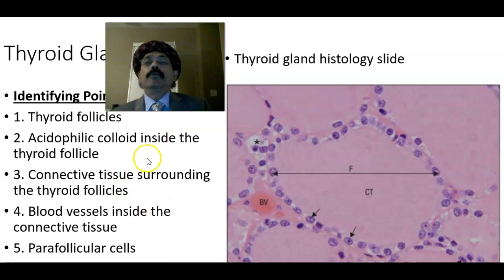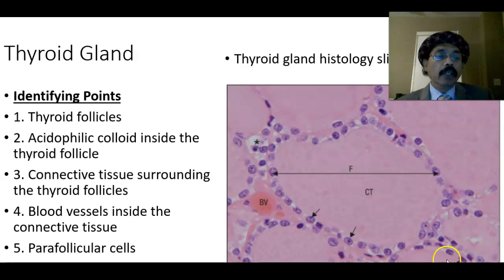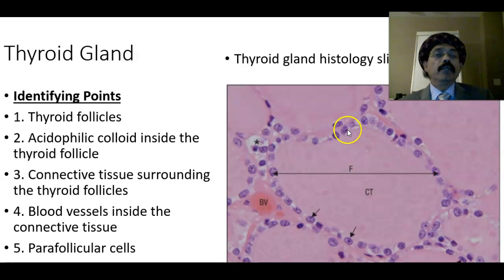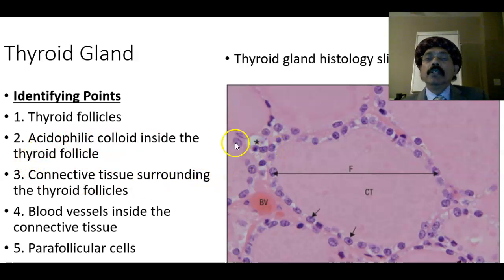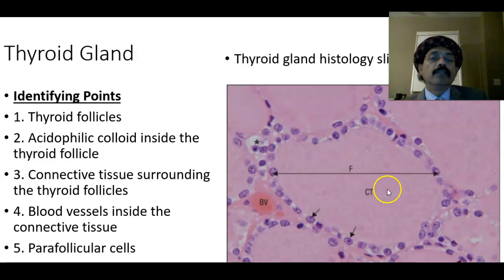Hello, today I will discuss the histology of the thyroid gland. The identifying points we have are thyroid follicles — here are the thyroid follicles, one follicle, another follicle. Thyroid follicles are lined by simple cuboidal epithelium in a normal euthyroid person. The follicle contains colloid, which is rich in thyroglobulin.